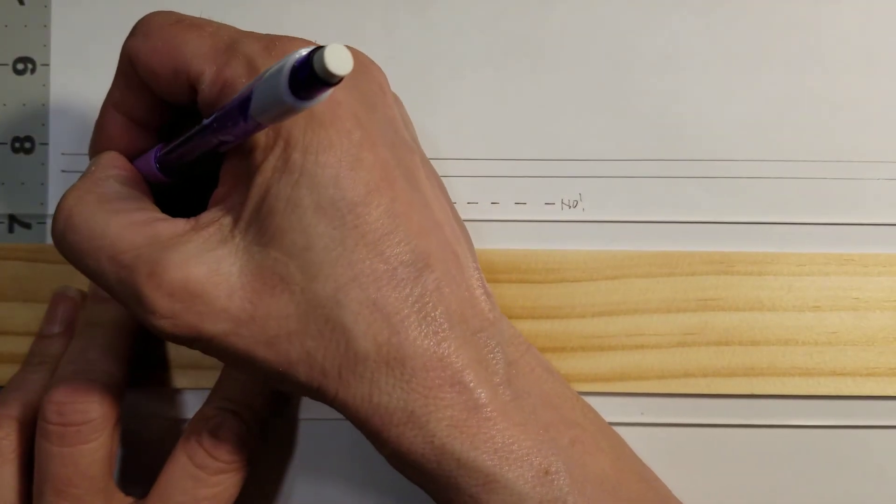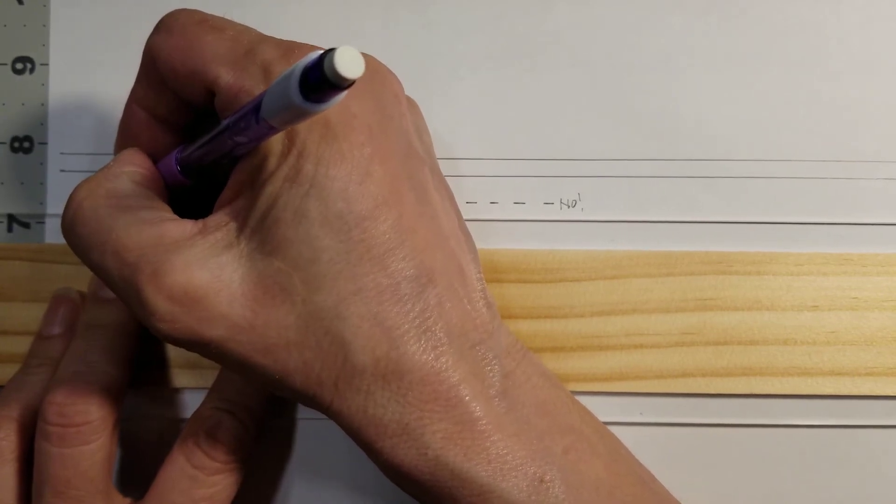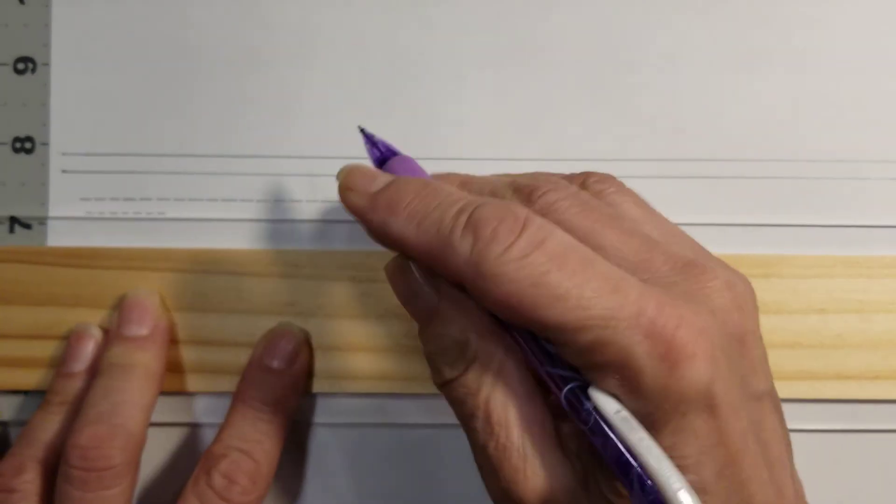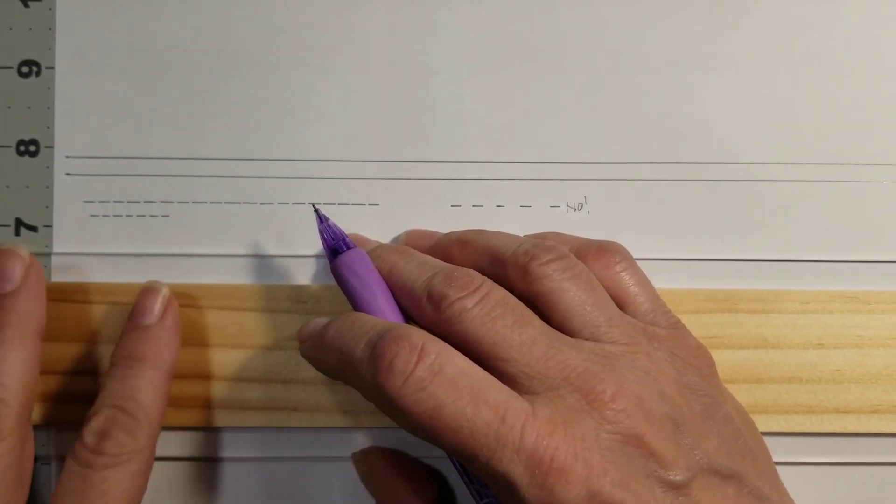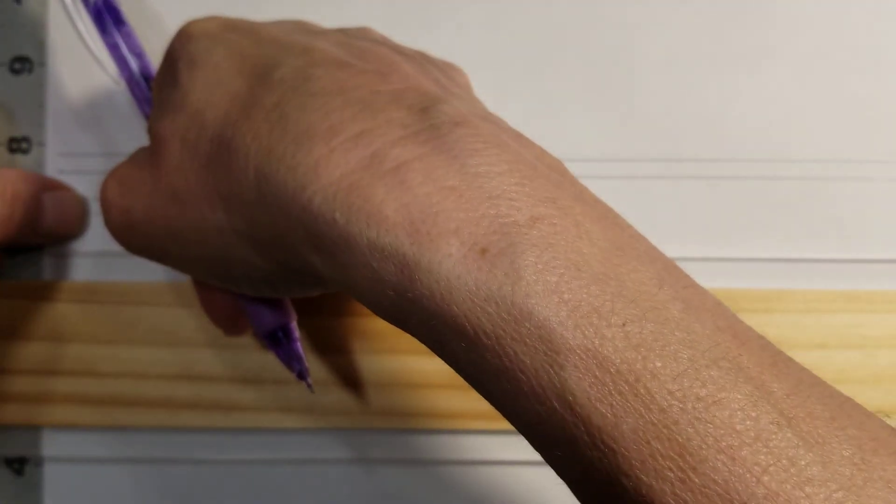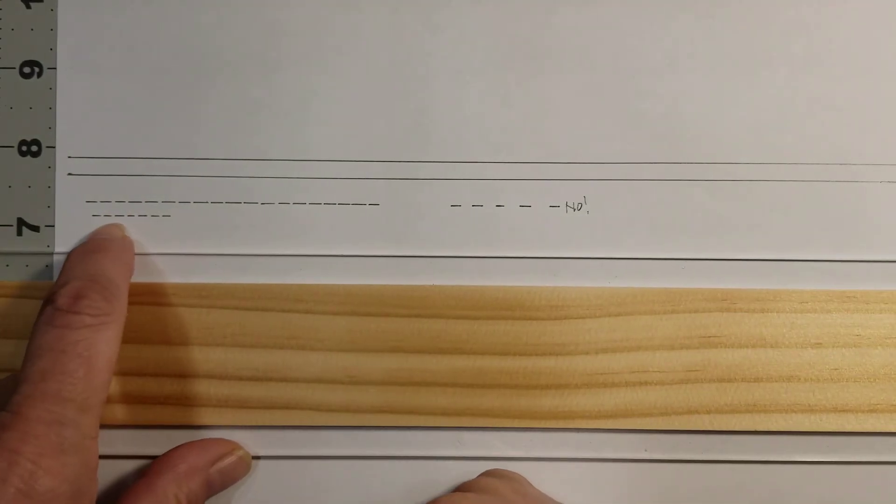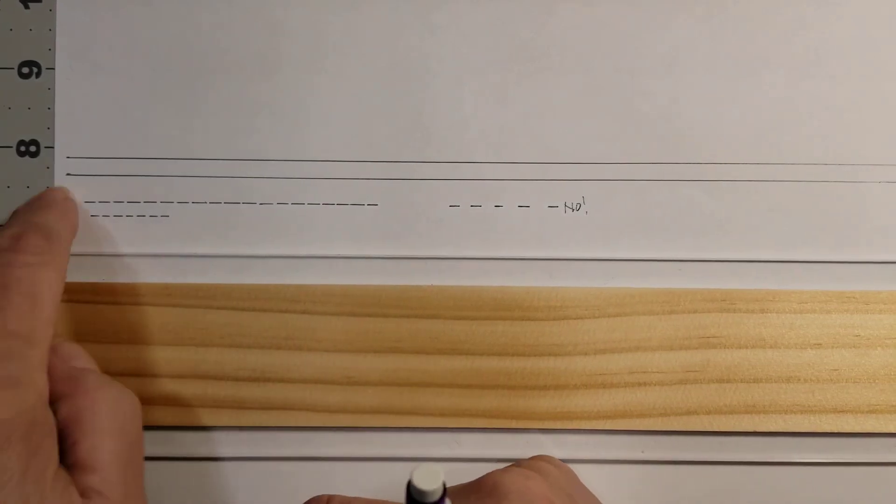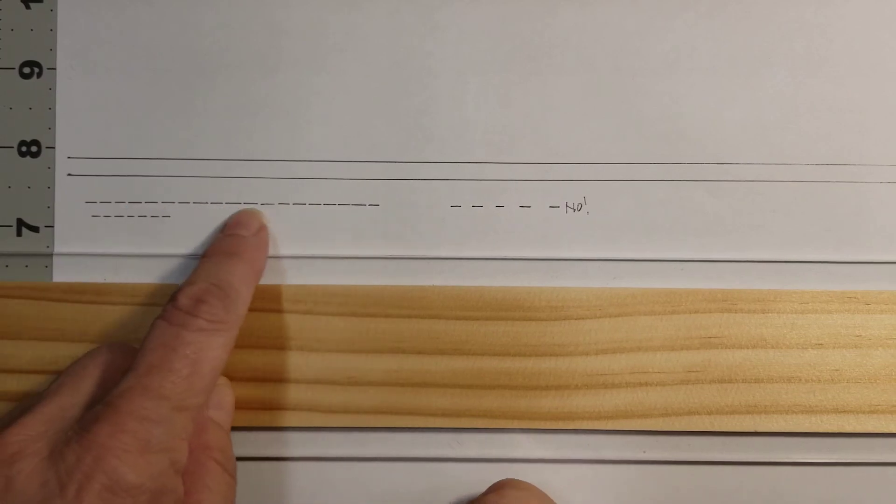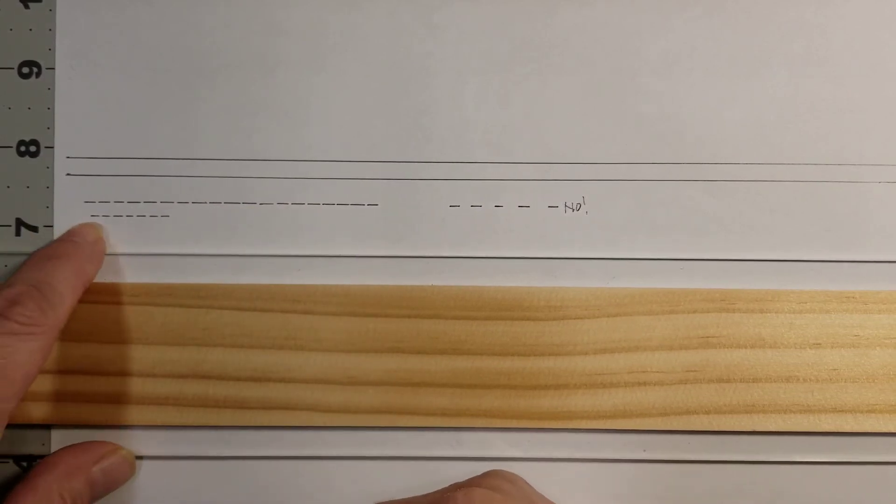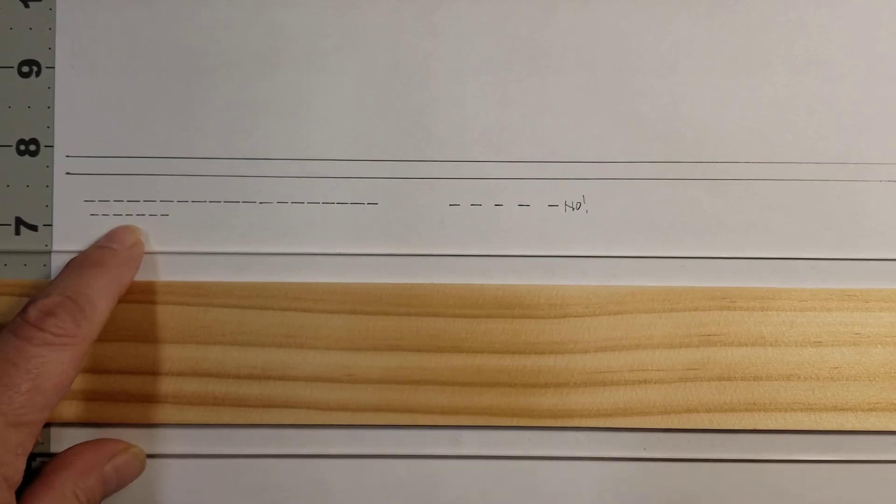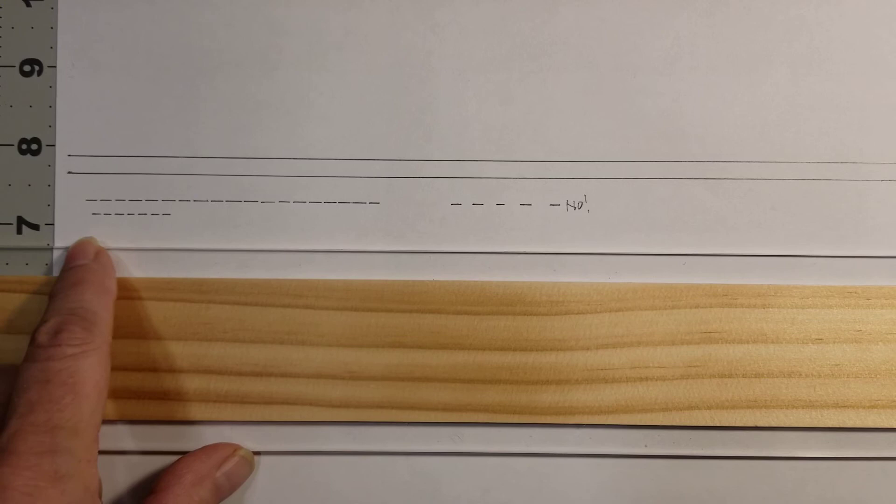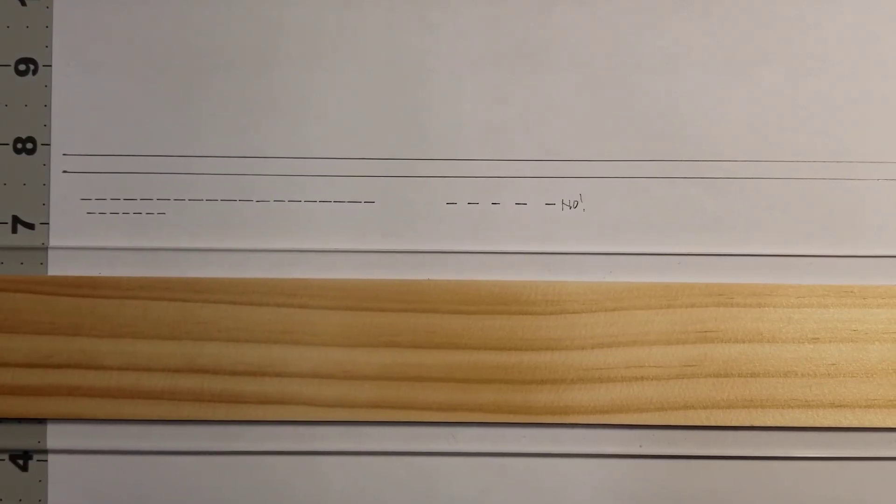So sometimes my hidden lines might have to be that small. It really depends on how much area you have in your drawing to indicate that you're showing something underneath. If you have a long stretch, you can maybe make them bigger and more evident. But if you're doing some smaller items in your plans, you may have to make them tiny so they show up as hidden lines within the width that you have available.